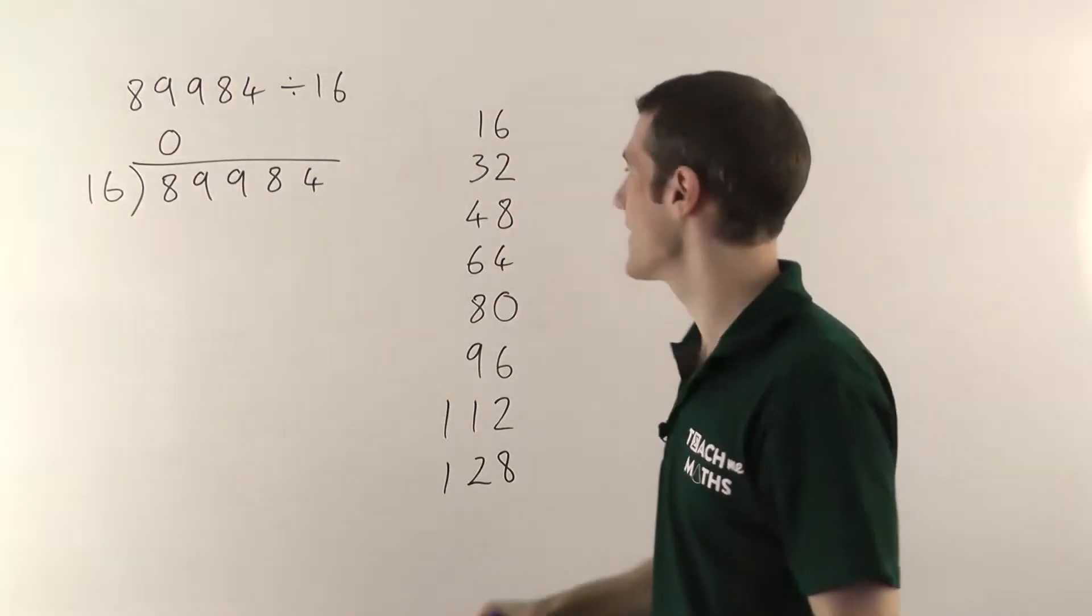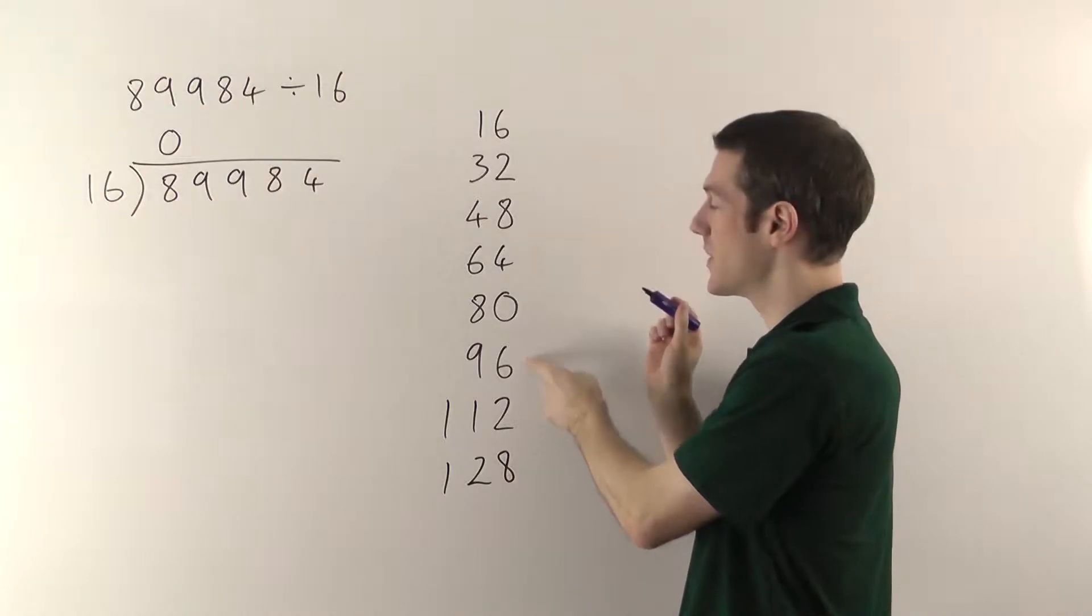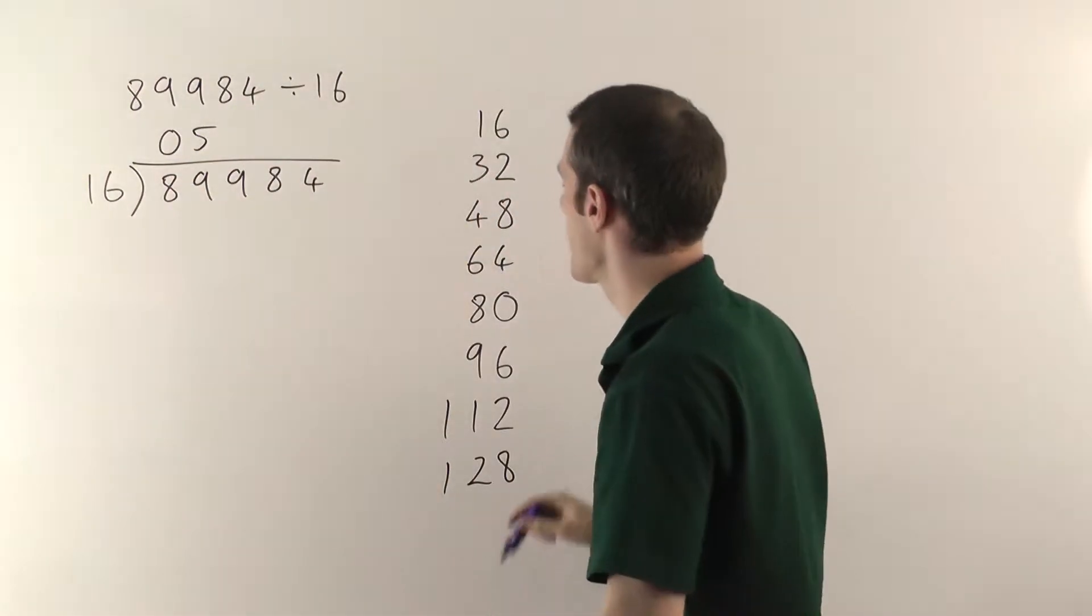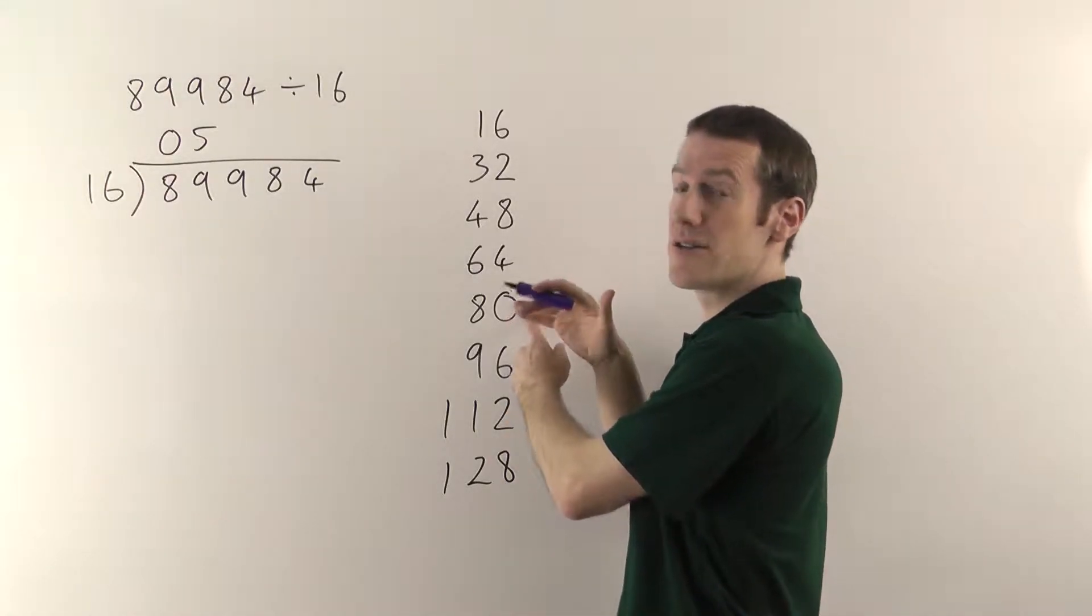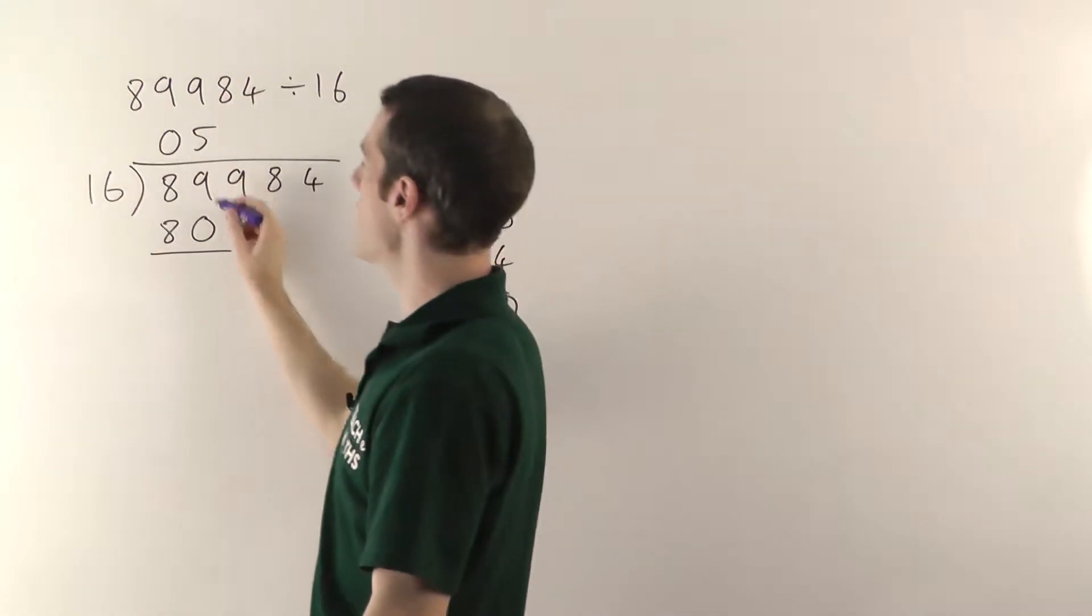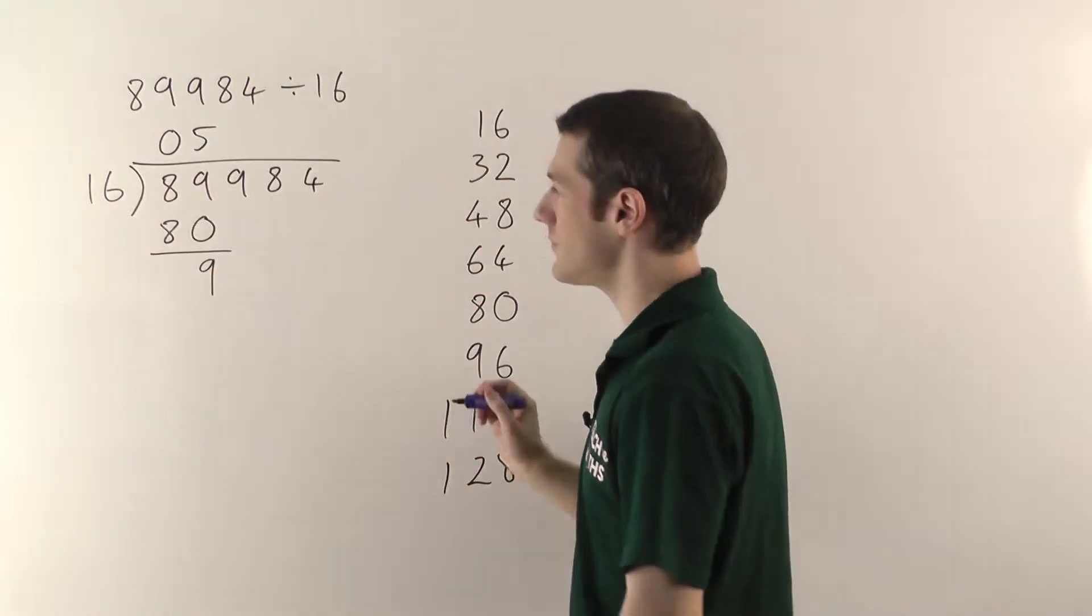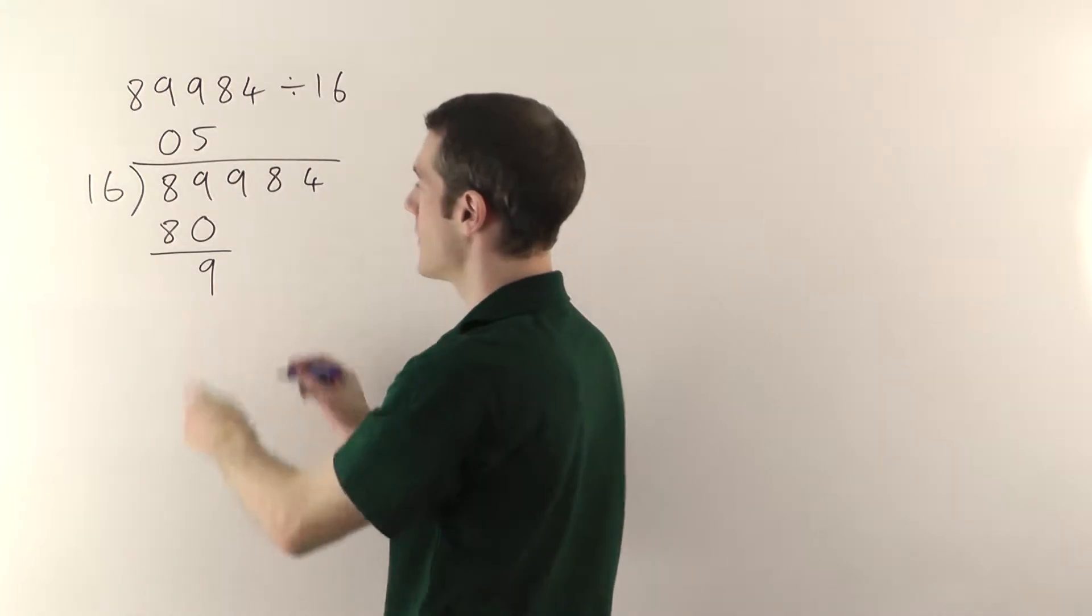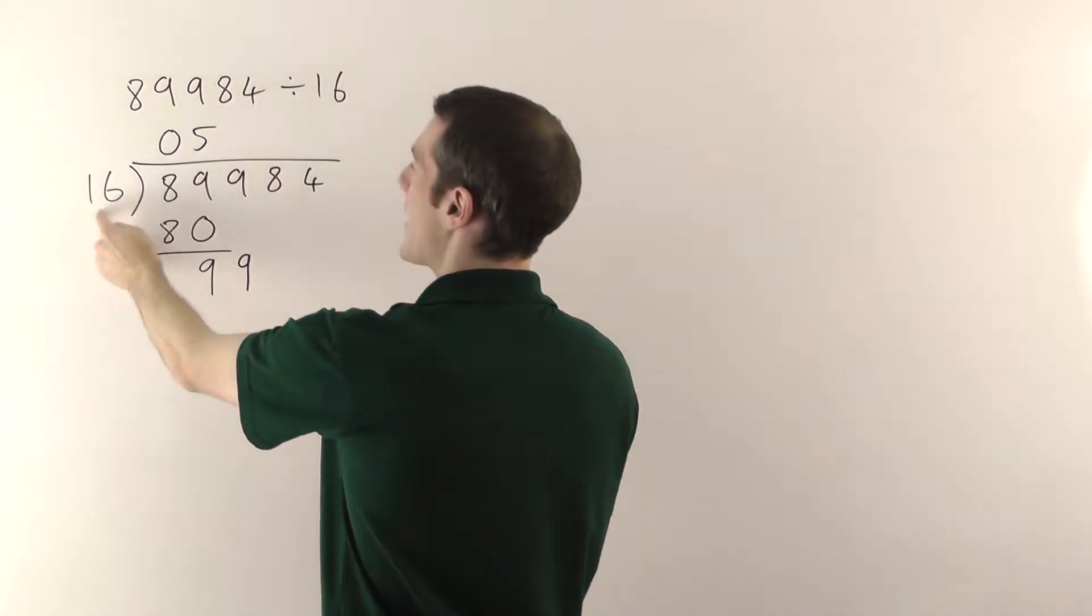So sixteens into eighty-nine. That's going to go five times. Ninety-six would be too big. So we're choosing five times. You always write the answer at the top here. Then five times sixteen, so the eighty in this case, you write that underneath. Underneath the eighty-nine you write eighty and then you do a little subtraction sum. Nine minus nothing gives you nine and eight minus eight gives you nothing.